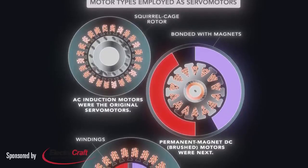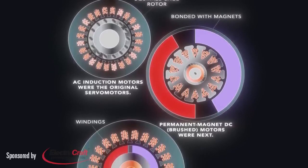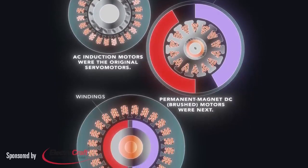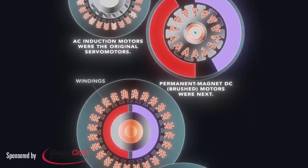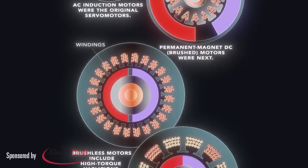Brushless DC motors don't run directly from AC lines. They can, with the proper drives, replace DC brush motors paired with drives in closed-loop applications.